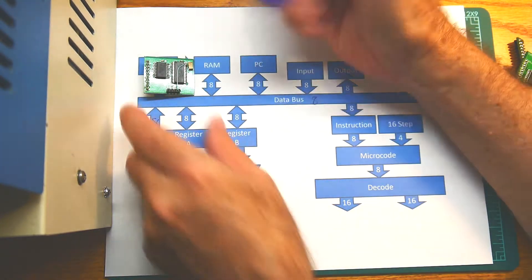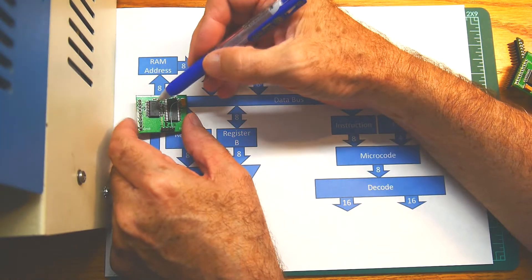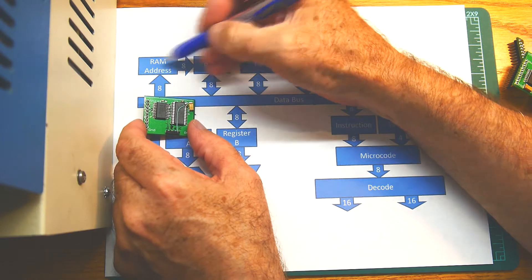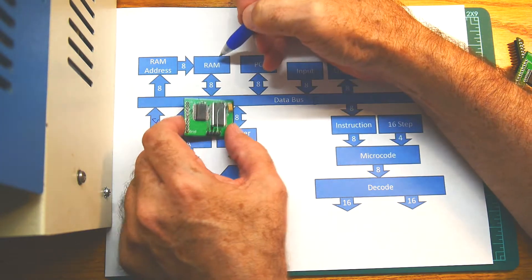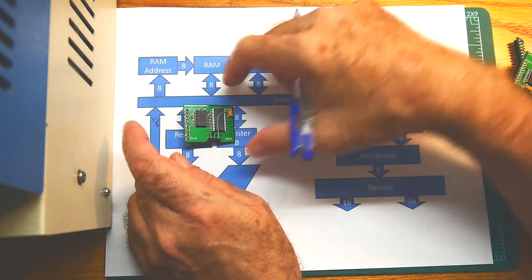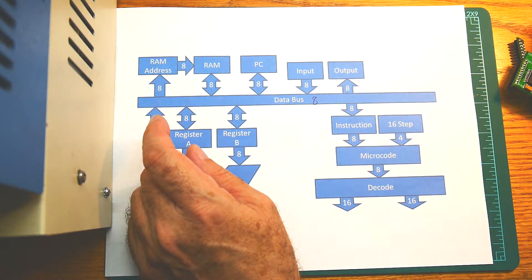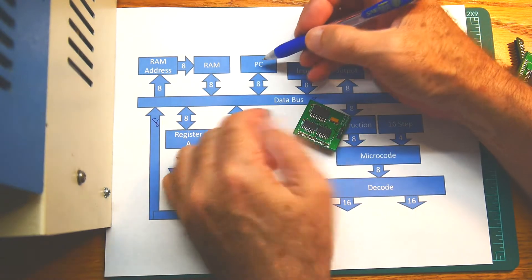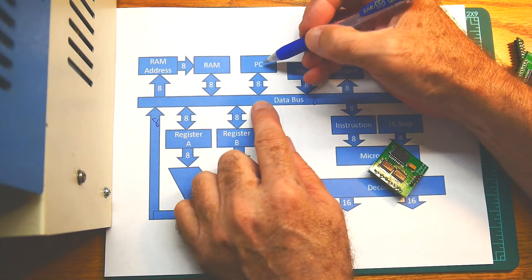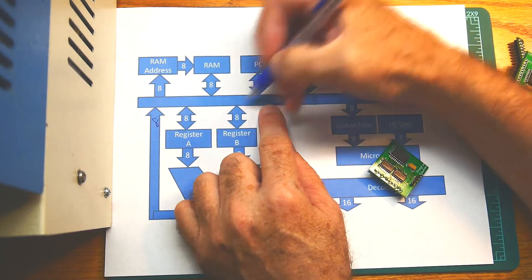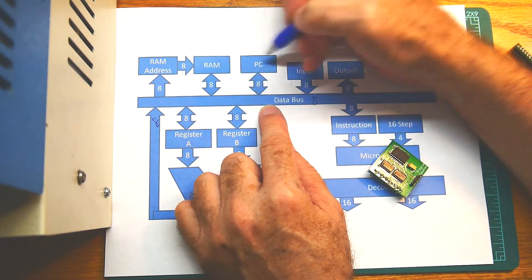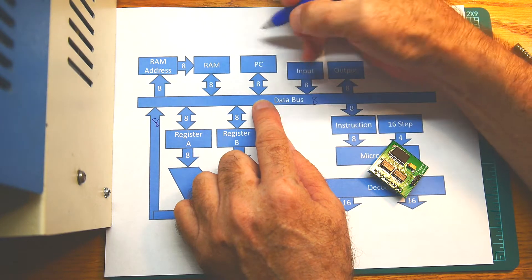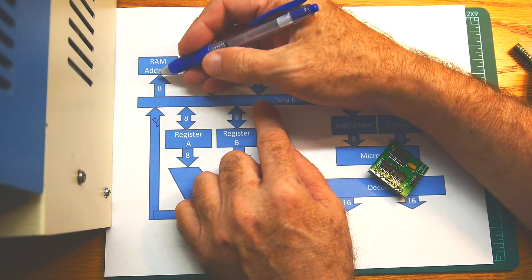We have the RAM card which has a buffer that holds the address, so you can write an 8-bit address. The RAM chip is read-write. Program counter is read-write. Usually you're using it where the program counter will get loaded into a RAM address.